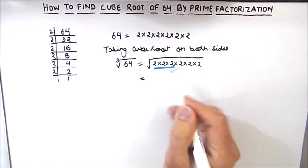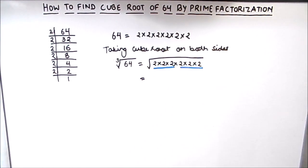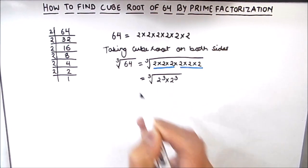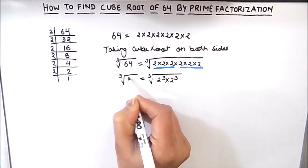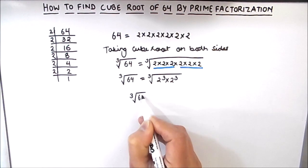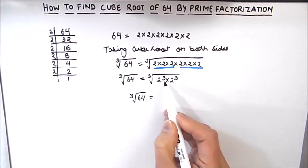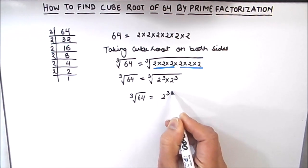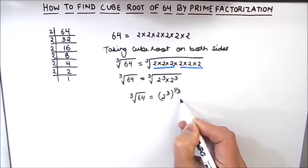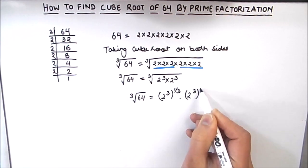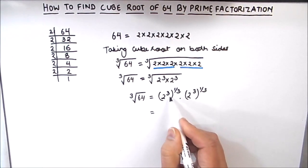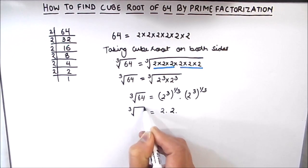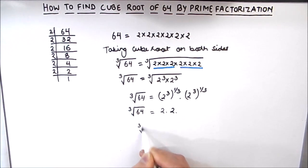Since we are finding the cube root, we can group these factors into cubes: 2 × 2 × 2 = 2³ and another 2 × 2 × 2 = 2³. So cube root of 64 equals cube root of 2³ × 2³. The cube root and the cube cancel each other, giving us 2 × 2, which equals 4. Therefore, the cube root of 64 is 4.